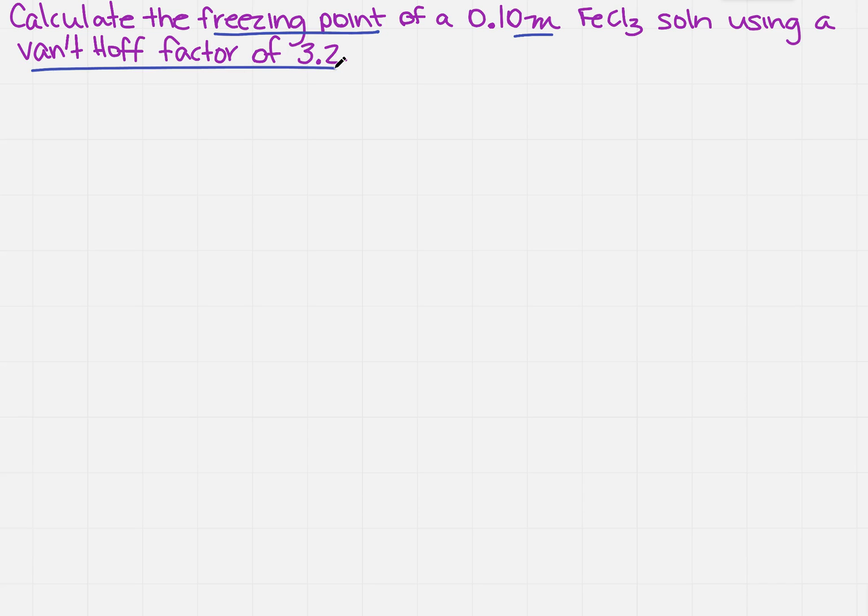So I just need a formula. I know that I have delta T sub F equals i, that's your van't Hoff, times the molality times the constant. Now remember it says it's a solution, so we're going to be using the constant for water. So just in case you don't remember what that is, that's 1.86 degrees C per molality.